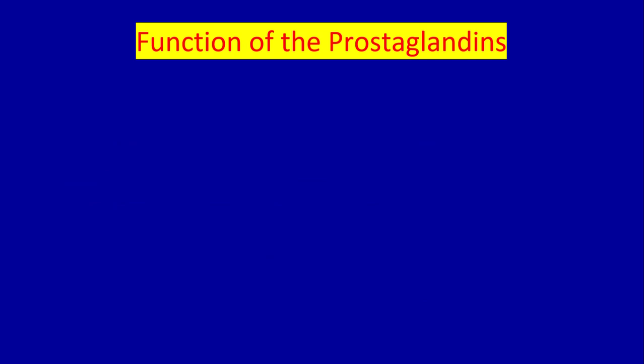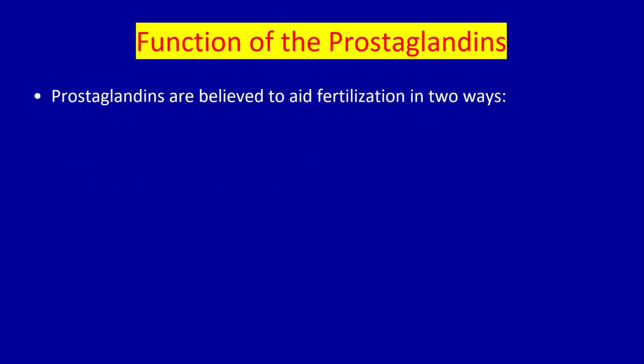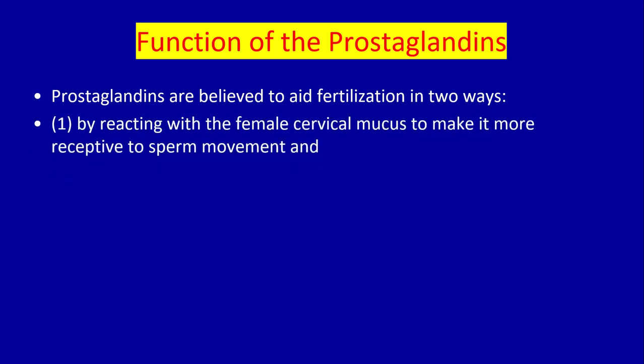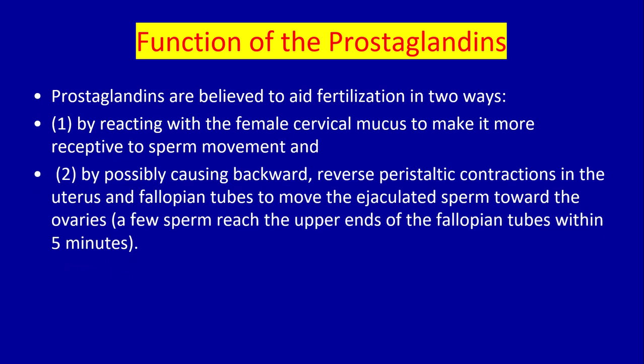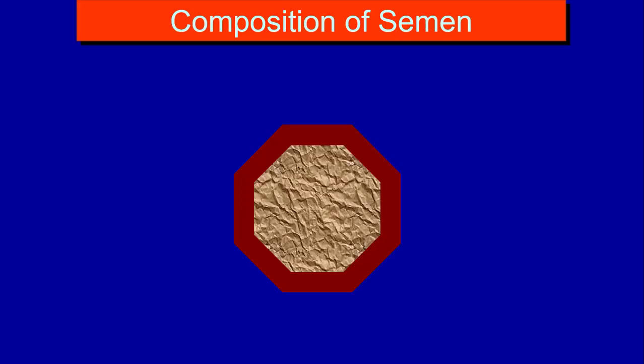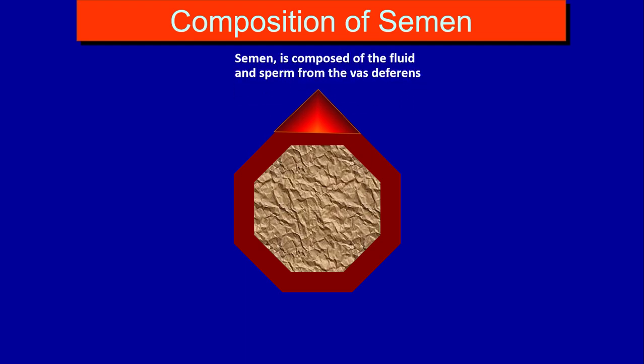The prostaglandins are believed to aid fertilization in two ways: by reacting with the female cervical mucus to make it more receptive to sperm movement, and by possibly causing reverse peristaltic contractions in the uterus and fallopian tube to move the ejaculated sperm towards the ovum. A few sperm reach the upper end of the fallopian tube within five minutes.